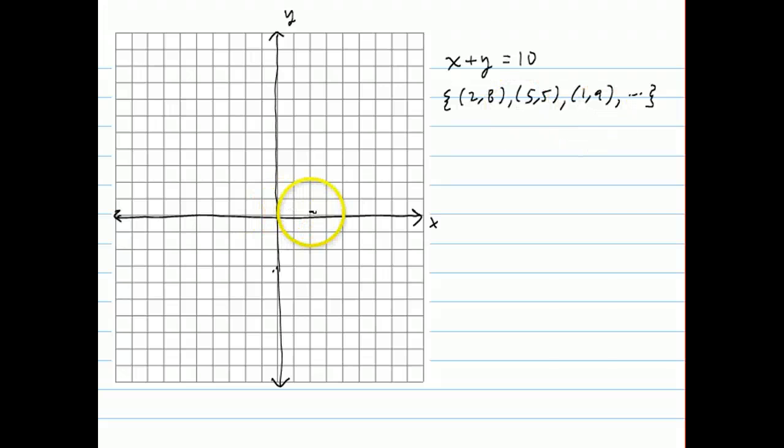So if I were to make a graph, these three points, 2 comma 8, that's 2, 8, and 5, 5, and 1 comma 9, which is up here, they seem to fall on the same line. And they do. If I were to connect these dots, I would get a line that represents the complete solution set to this equation, x plus y equals 10. So any two numbers that you could think of that add up to 10 will be the point representing those two numbers will be on this line. So what we would say is that this line, x plus y equals 10, contains the points 2, 8, 5, 5.